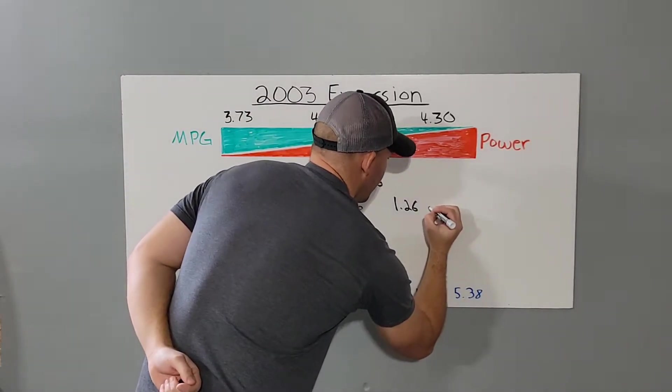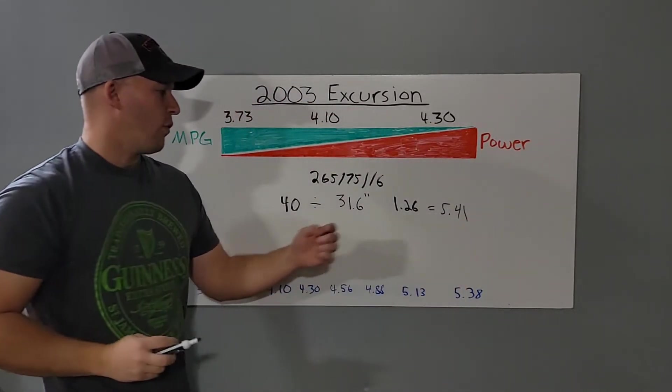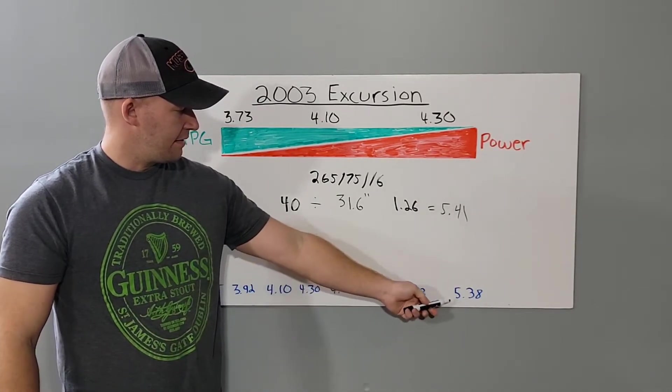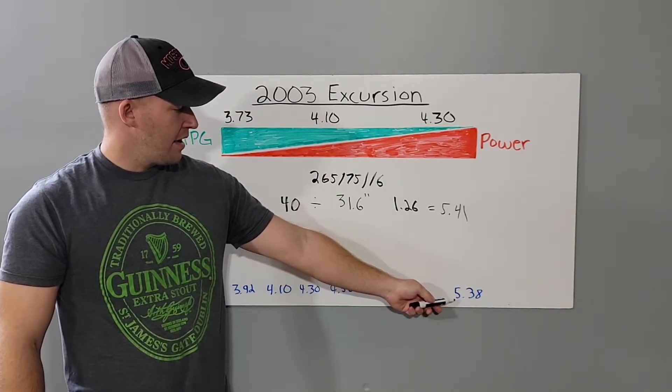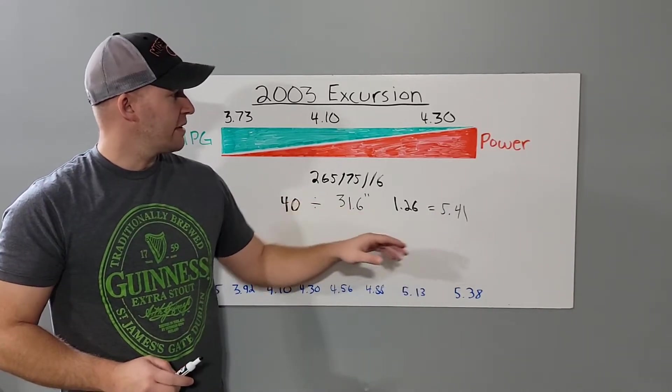And it just so happens that just about the biggest gear you can get in a 10.5 inch rear is 5.38. So, 5.38 is going to bring you very close to that.